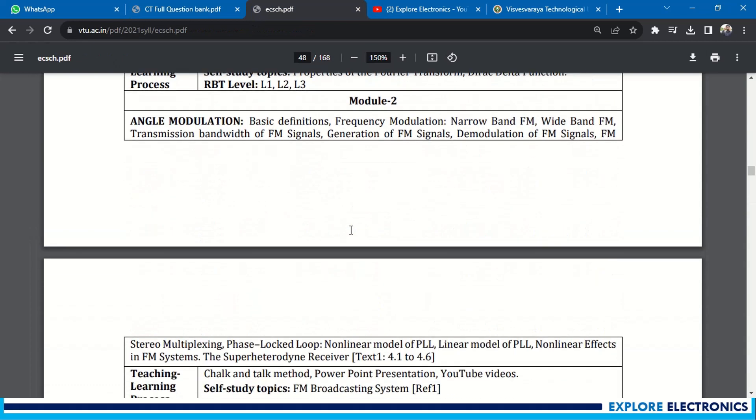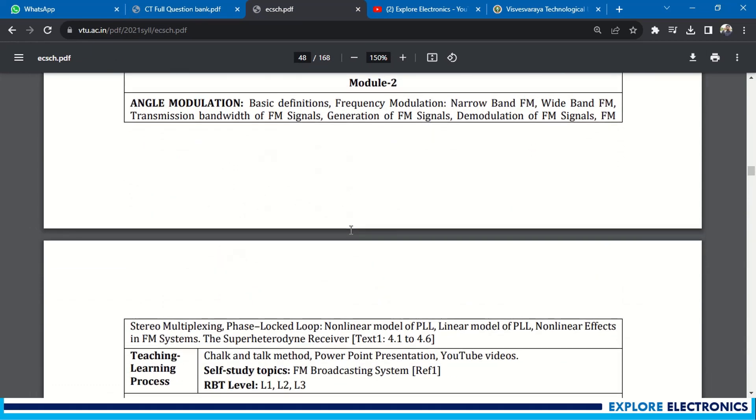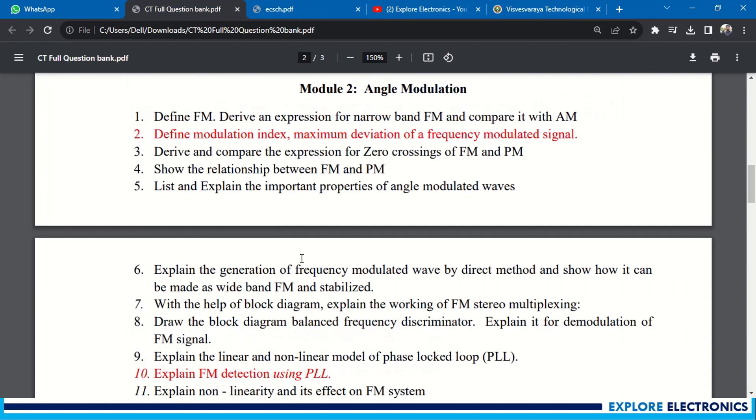Module 2 - if you look at the syllabus, this is angle modulation: frequency modulation, generation of FM signals, demodulation of FM, phase locked loop (PLL), linear model of PLL, non-linear effects of FM system. Let us see the questions. Define FM, derive an expression for narrow band FM and compare it with AM.